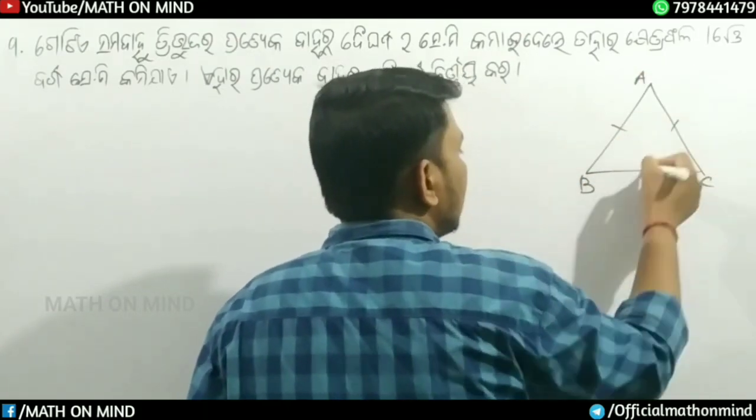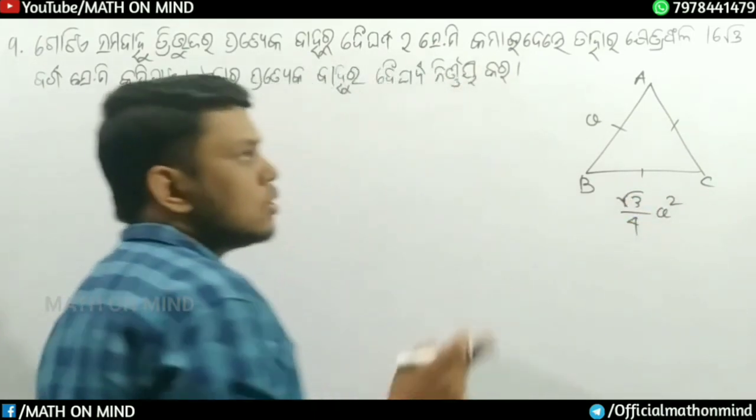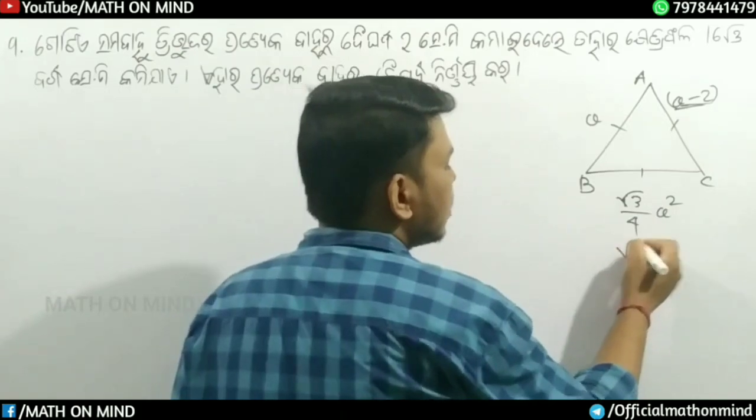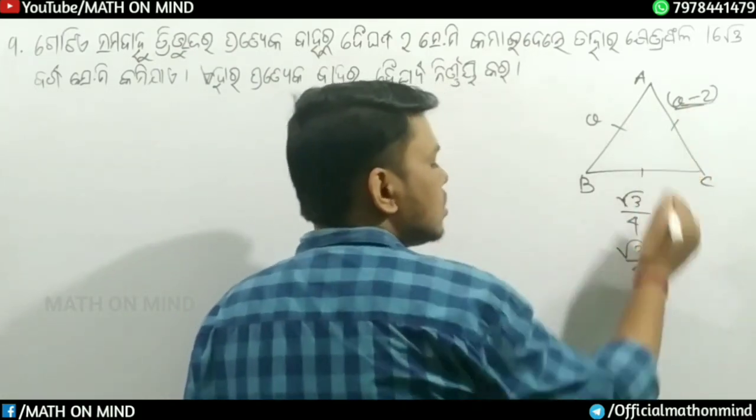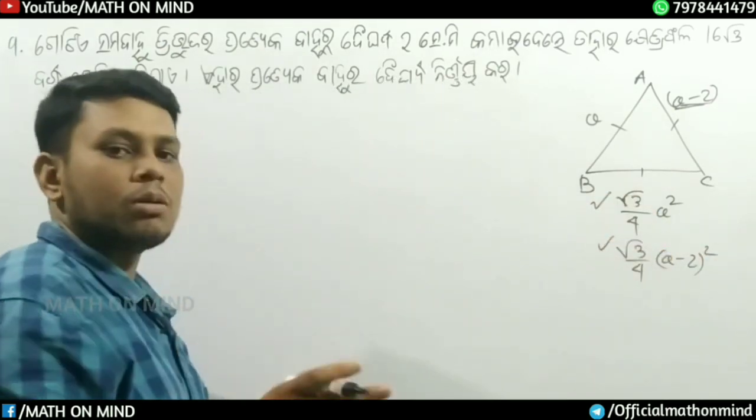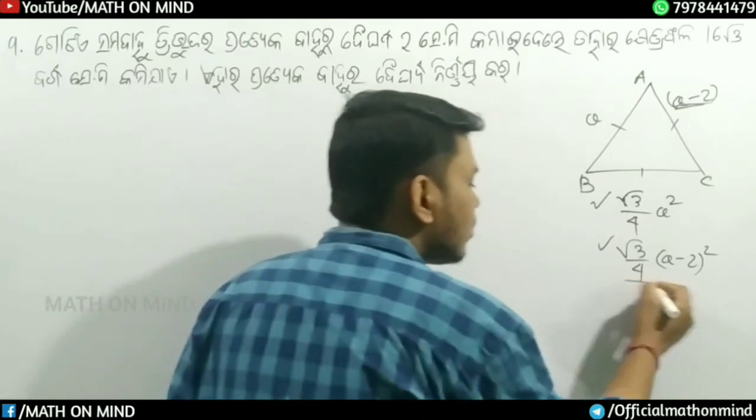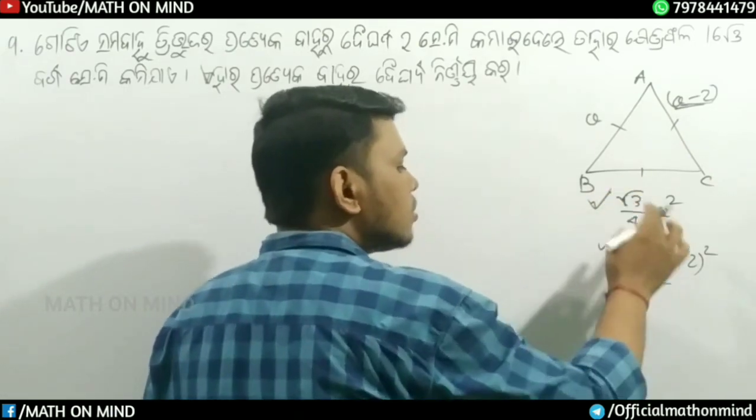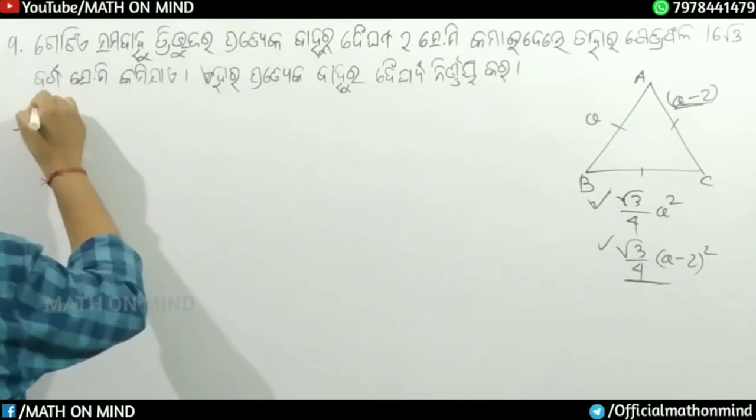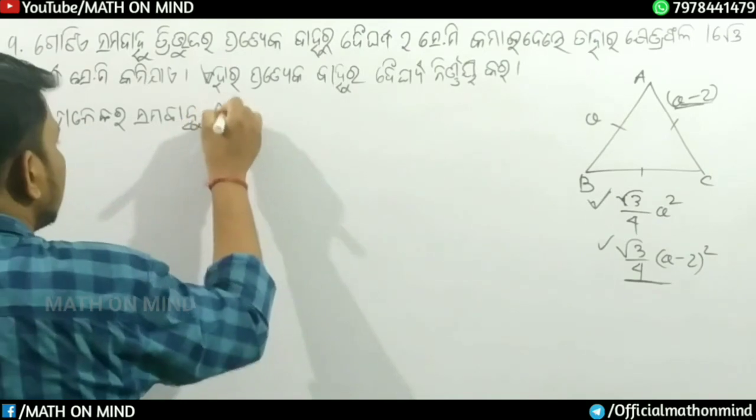This triangle has sides where one side is a, another is root 3 by 4 times a squared. The total perimeter involves a minus 2. The area formula gives us root 3 by 4 into a minus 2 quantity squared. Working through this calculation, we get 16 root 3. So the area is 16 root 3 square centimeters. Let me show you the solution step by step.